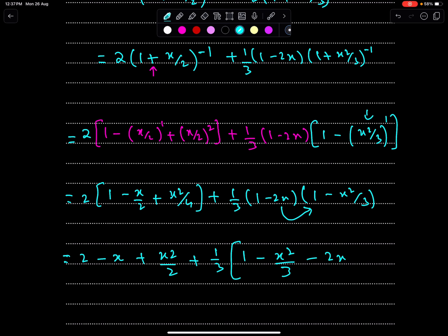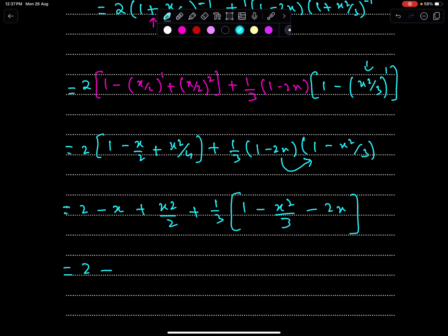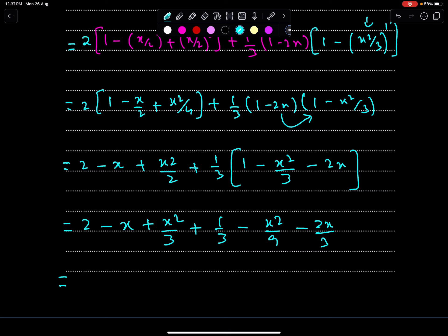So, minus 2x, so we have 2 minus x square upon 3, plus 1 upon 3, minus x square upon 9, minus 2x upon 3. So, finally, we have 7 upon 3, when we will simplify these two, we will get 7 upon 3. So, 3, minus x, and minus 2x upon 3, so 3, so it should be minus 5x upon 3 after taking LCM simplification.